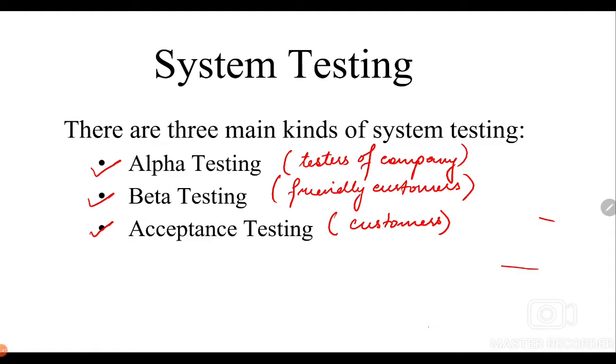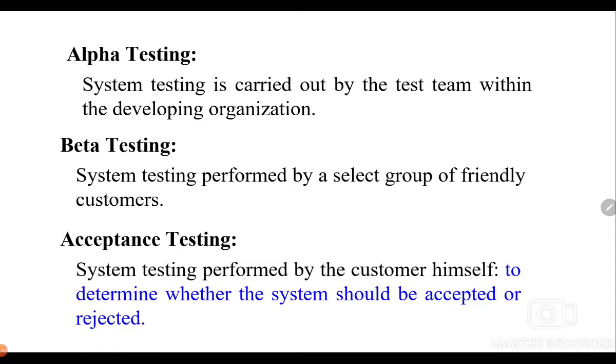Talking about alpha testing, it is carried out by the test team within the developing organization before the product is released partially or completely into the market. Beta testing is the system testing which is performed by a select group of friendly customers.